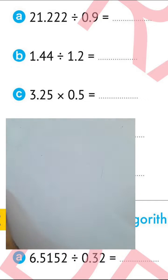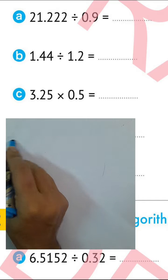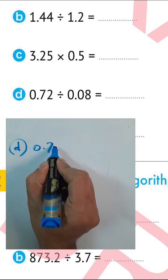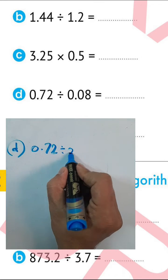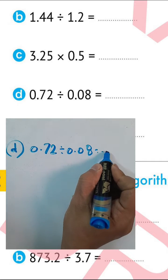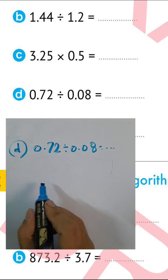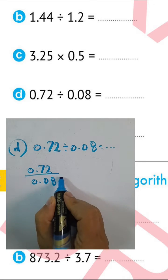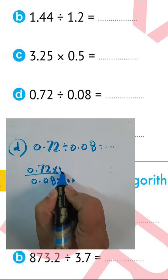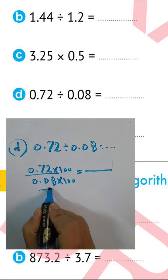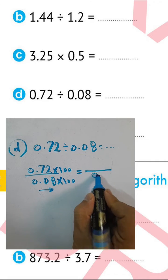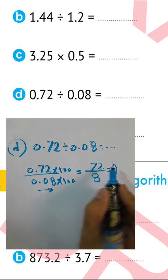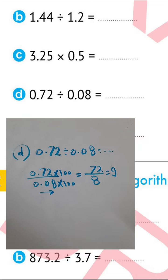Next: 0.72 divided by 0.8. We can write 0.72 over 0.8. Cancel the point by moving the point right-hand side by two places, giving 72 in the numerator and 8 in the denominator. 72 divided by 8 equals 9. The result is 9.